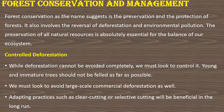How can we preserve forests? Forest conservation is the preservation and protection of forests. It also involves the reversal of deforestation and environmental pollution. The preservation of all natural resources is absolutely essential for the balance of our ecosystem. The foremost method to conserve forests is to control the process of deforestation. While deforestation cannot be avoided completely, we must look to control it — young and immature trees should not be cut as far as possible, and we must avoid large-scale commercial deforestation. Adapting practices such as clear cutting or selective cutting will be beneficial in the long run.